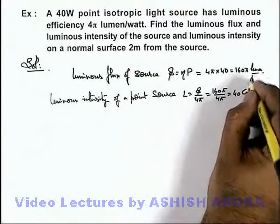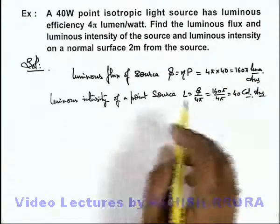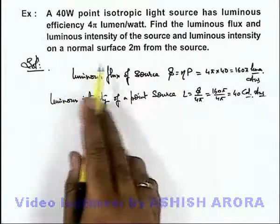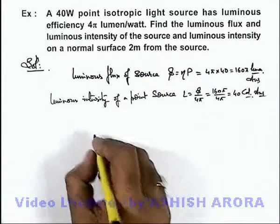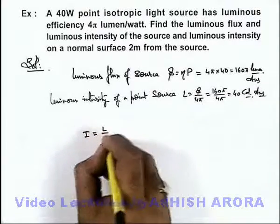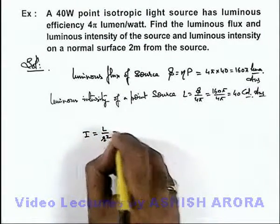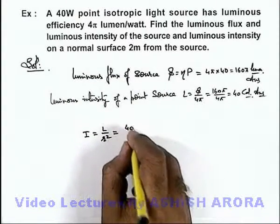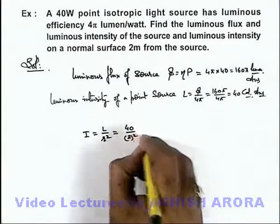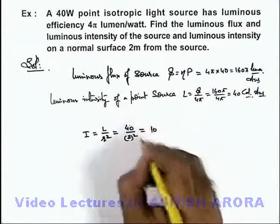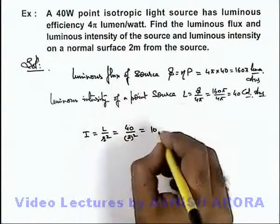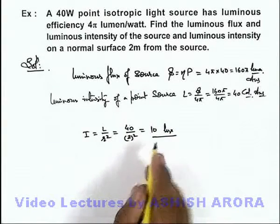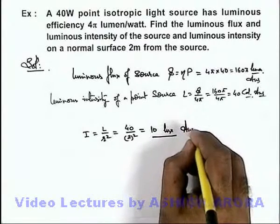So those are the answers to the first parts of our problem. The problem also asks for the illuminance on a normal surface 2 meters from the source. Illuminance E = I / r². For a normal surface, this is 40 divided by 2², which is 40 divided by 4, giving us 10 lux. Illuminance is measured in units of lux.